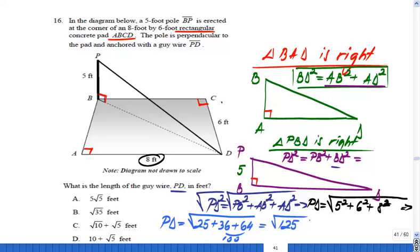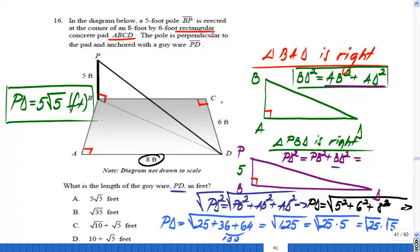Are you done? You're not done because you should simplify the square root. This is square root of 25 times 5, which equals square root of 25 times square root of 5. Square root of 25 is 5, so PD equals 5 square root 5.